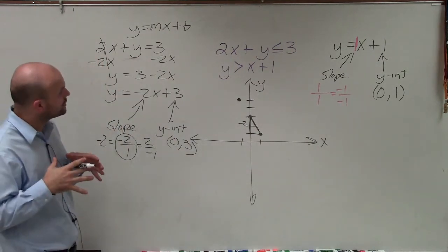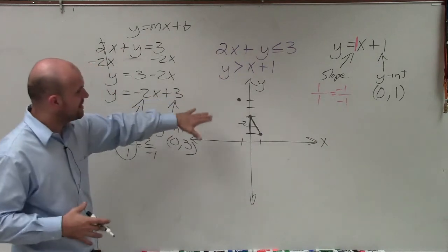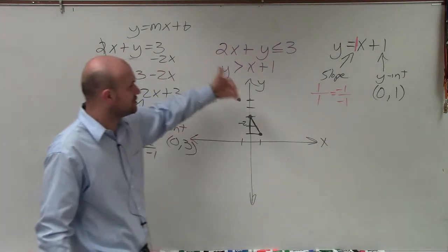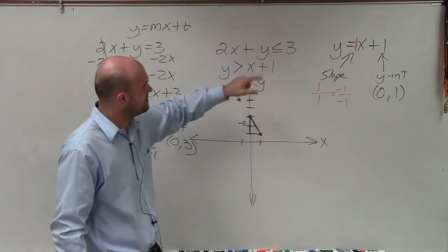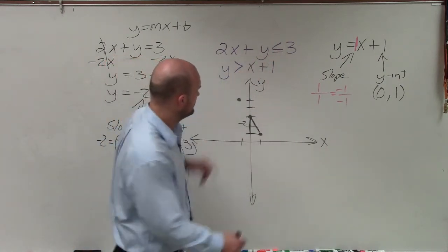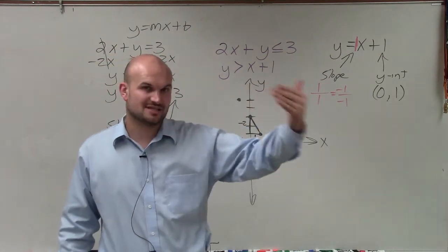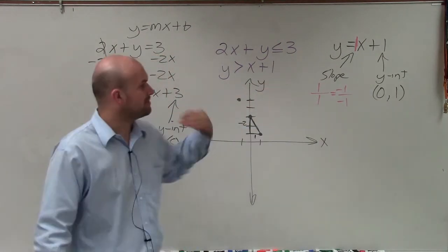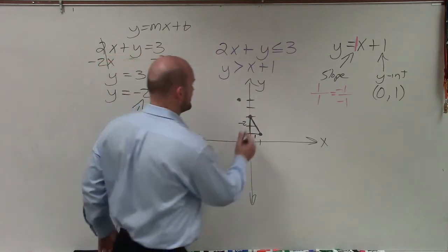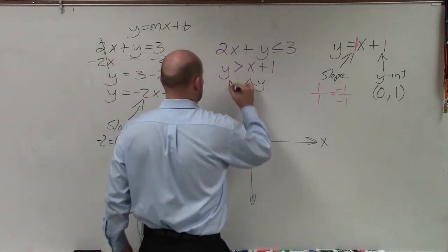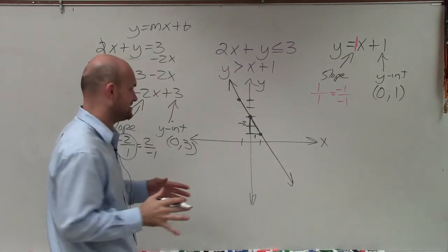Now I want to go back to my inequality and determine if the boundary line is dashed or solid. We can determine that by looking at our inequality symbol. Since this is less than or equal to — not just less than — we know that our boundary line is going to be part of our solution. So therefore, this is going to be a solid line. We'll get to the shading afterwards as our last step.